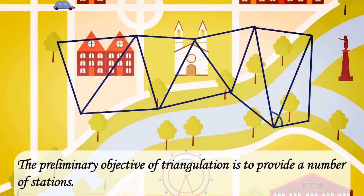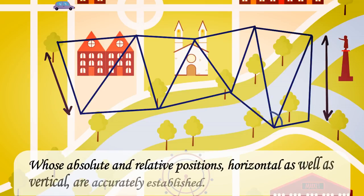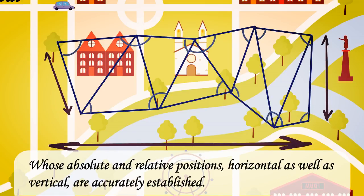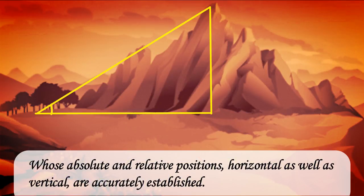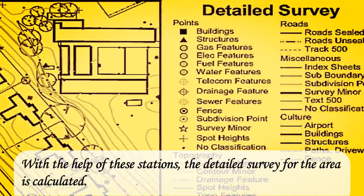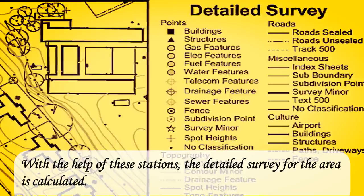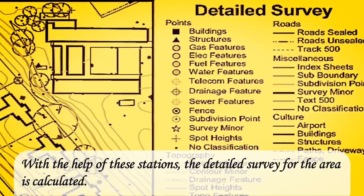The preliminary objective of triangulation is to provide a number of stations whose absolute and relative positions, horizontal as well as vertical, are accurately established. With the help of these stations, the detailed survey for the area is calculated.